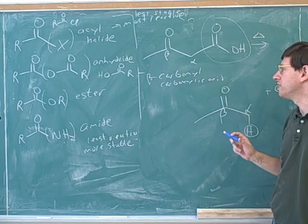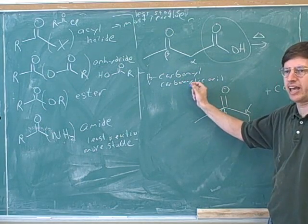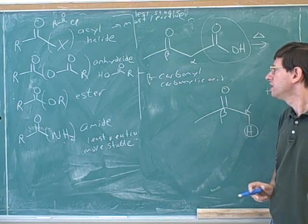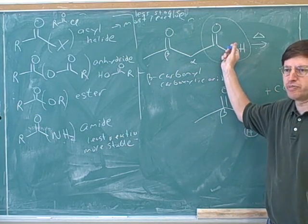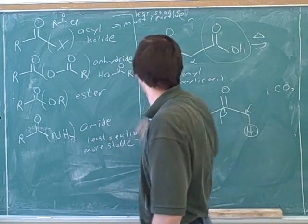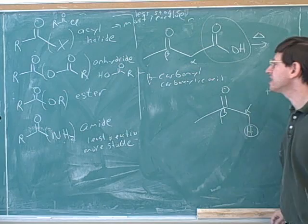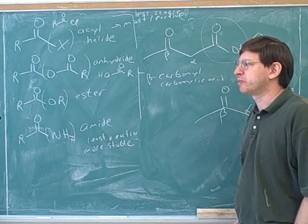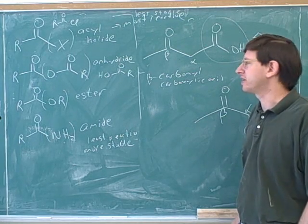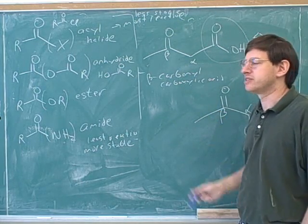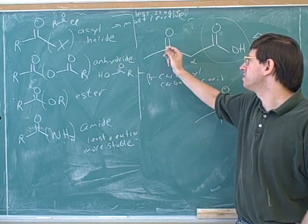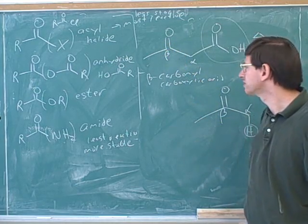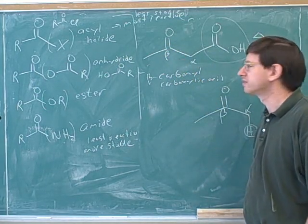Now, this doesn't always happen. It only happens to beta carbonyl carboxylic acids. So there's two things that we need for this to happen. First of all, there needs to be a carboxylic acid group. Carboxylic acid derivatives don't cut it. It has to be an actual carboxylic acid group. And you need the beta carbonyl group. I don't know if you remember, but when I first started out here, I drew a picture that I had to erase because I drew an alpha carbonyl. So it's not an alpha carbonyl or a gamma carbonyl. The carbonyl has to be on the beta carbon. When you look at the mechanism, you'll see why it has to be on the beta carbon. So it's got to be a beta carbonyl.